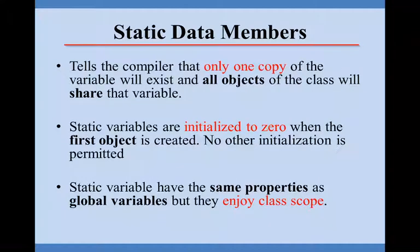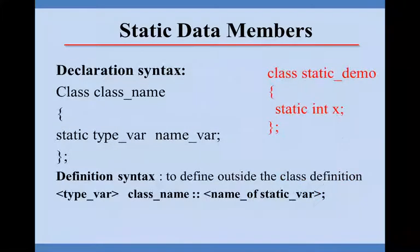Static variables are initialized to zero when the first object is created. No other initialization is permitted. Static variables have the same properties as global variables but they enjoy class scope. The scope is limited to the class.